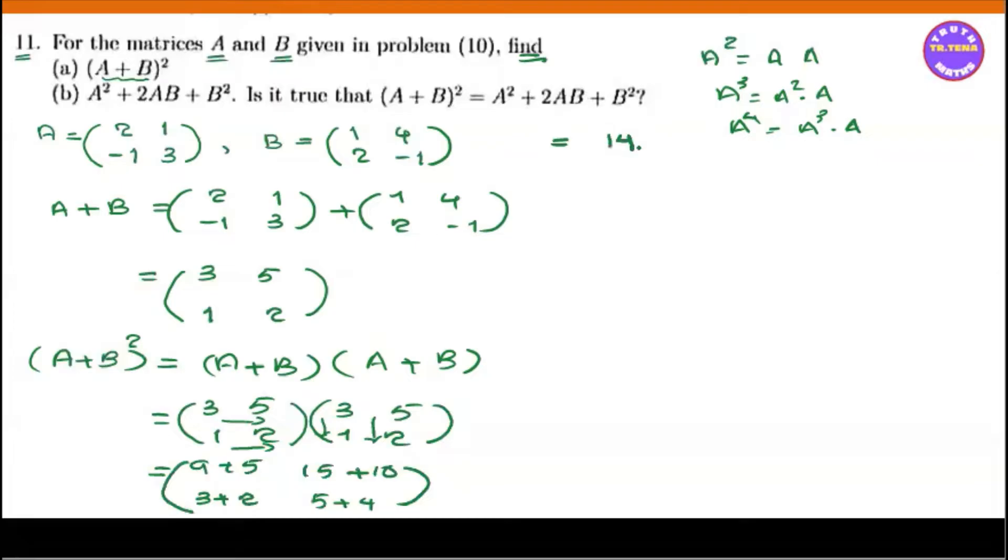2 times 5 is 14, 15 is 25, 3 plus 2 is 5, 5 plus 4 is 9. Now verify that A square plus 2AB plus B square.